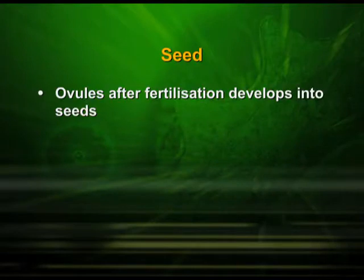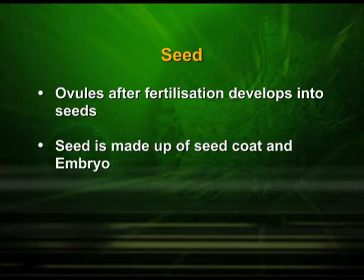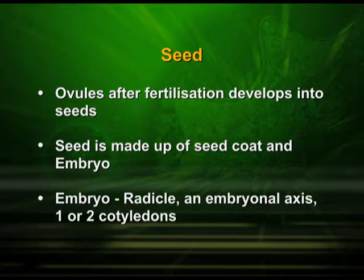Seed. Ovules after fertilization develop into seeds. The seed is made up of seed coat and embryo. The embryo develops into the radicle and embryonal axis and one or two cotyledons.